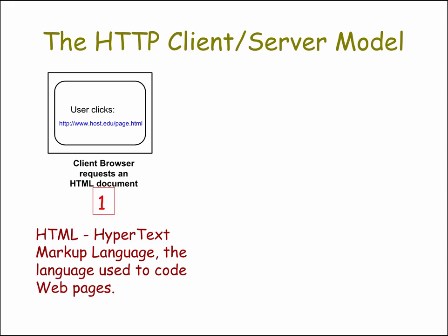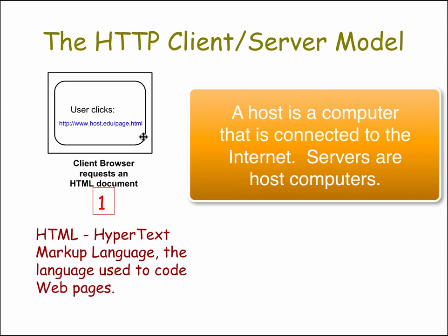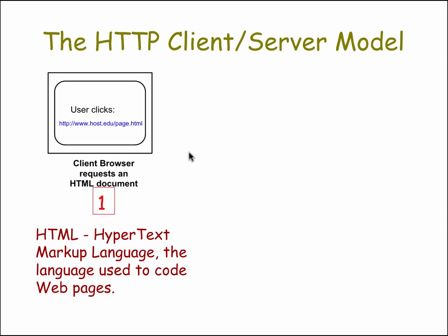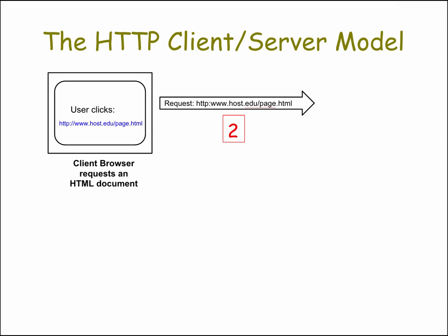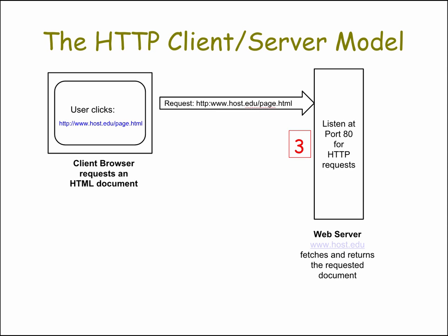Let's look at how that transaction takes place. Suppose you're visiting a web page in your browser, and there's a link on it: www.host.edu/page.html. Your browser is viewing a document coded in the Hypertext Markup Language, which is the language used to code web pages. When you click on that link, your browser knows to send a request over the Internet for that page to a web server at host.edu, at www.host.edu. That URI corresponds to an IP address.